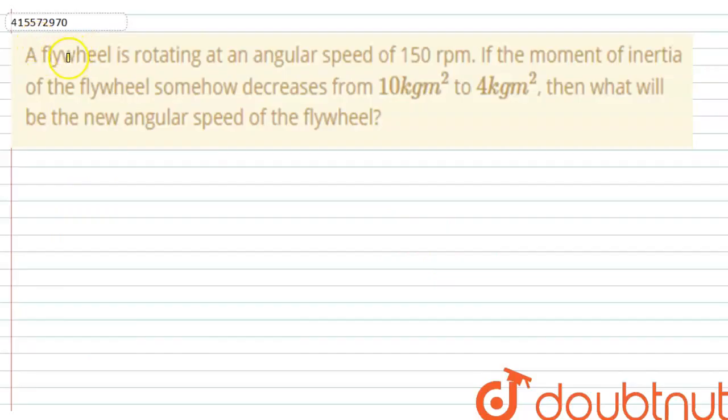Hello guys, this question has come from us. This flywheel is rotating at an angular speed of 150 rpm. If the moment of inertia of the flywheel somehow decreases from 10 kgm² to 4 kgm², then what will be the new angular speed of the flywheel?